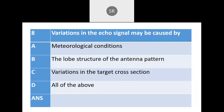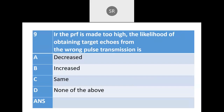Next: Variations in the echo signal may be caused by meteorological conditions, the lobe structure of the antenna pattern, variations in the target cross section, or all of the above. The echo signal is reflected from the object and can be affected by all these factors. The correct answer is D — all of the above.